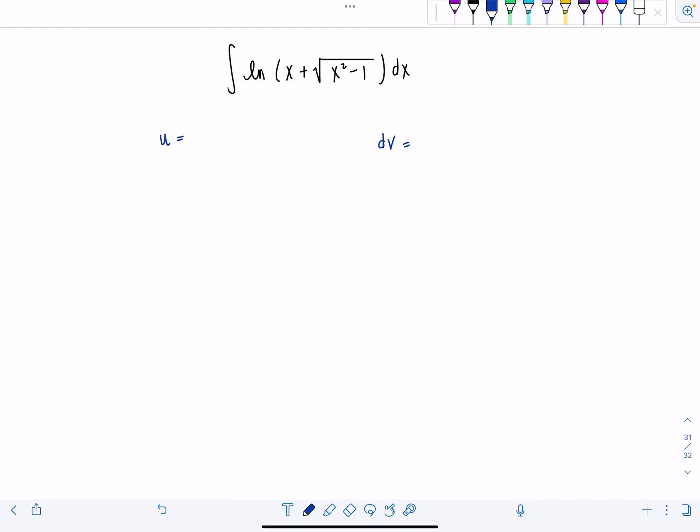So I'm going to let u equal natural log of x plus square root of x squared minus 1, and then dv is just going to be plain old dx.